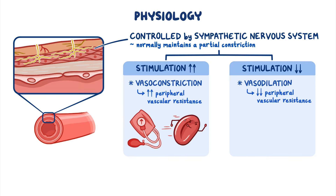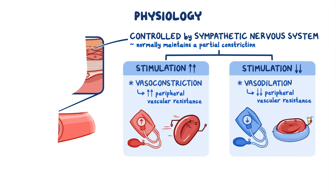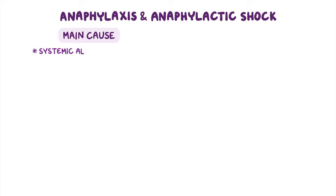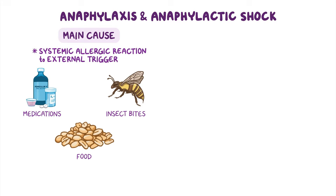Vasodilation, when blood volume is constant, lowers blood pressure and slows down blood flow through the blood vessels. The main cause of anaphylaxis and anaphylactic shock is a systemic allergic reaction to an external trigger, which can be medications, insect bites, or food — for example, nuts.